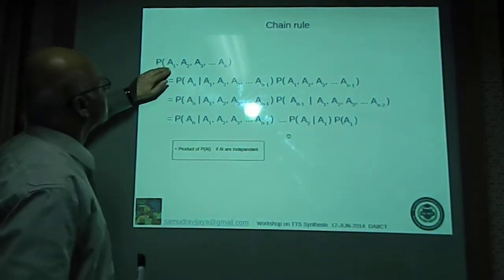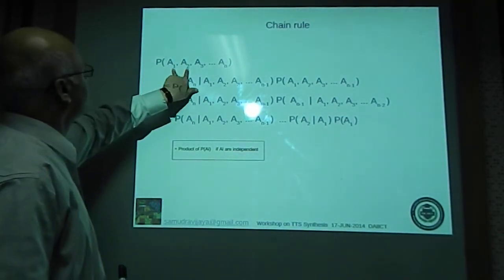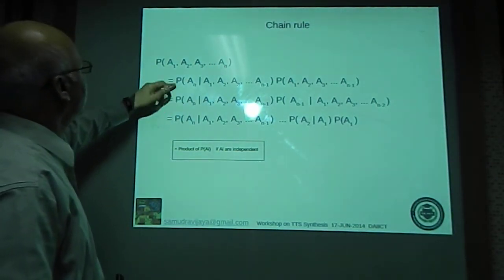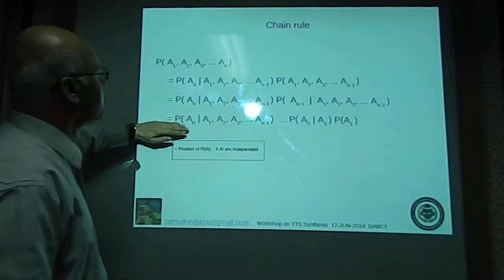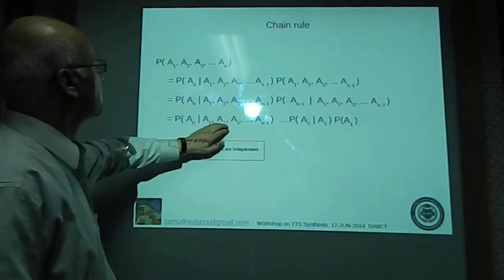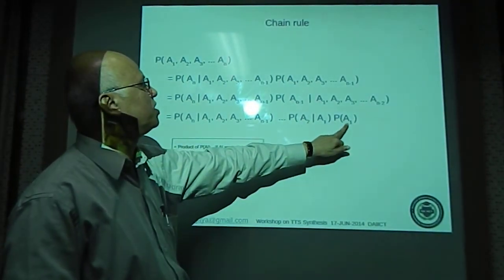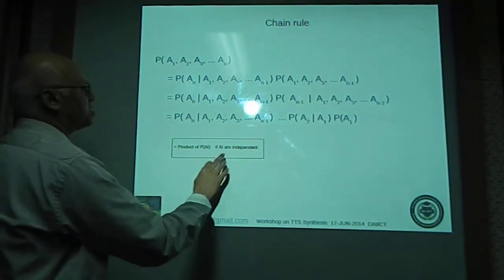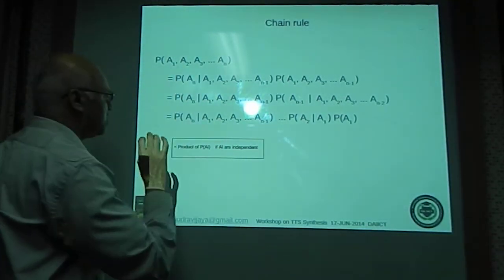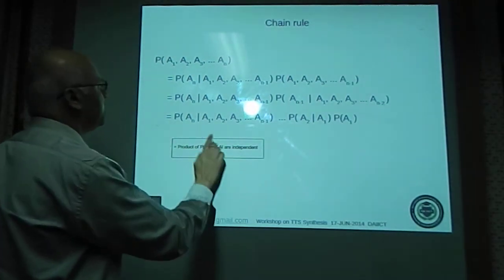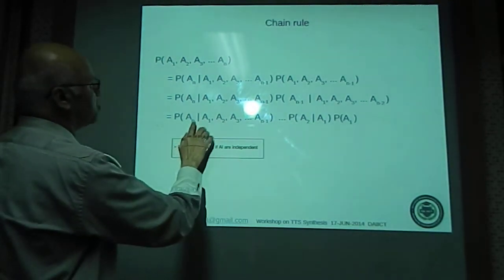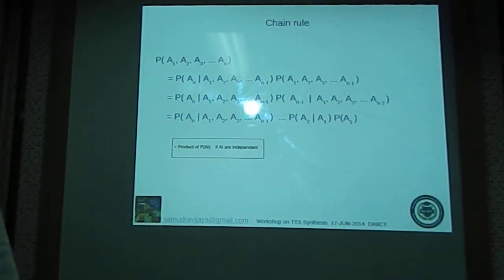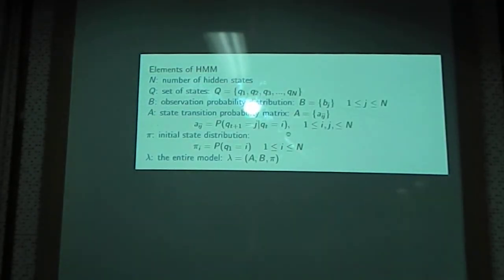Next, we extend the joint probability definition not just to two events but multiple events. When multiple events come, the joint probability can be written as a product of various conditional probabilities ending with the a priori probability of the first event. And if events A1, A2, A3 are independent — not just uncorrelated, but independent — then this comes out to be the product of the a priori probabilities of each event. We will use this in our derivation.